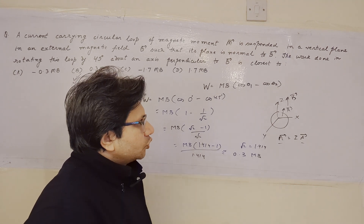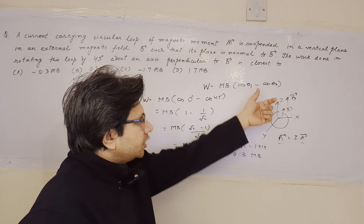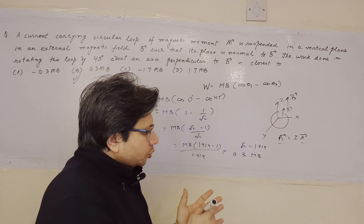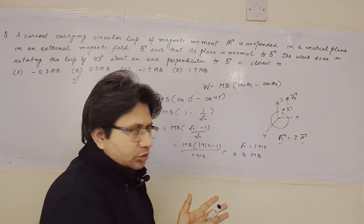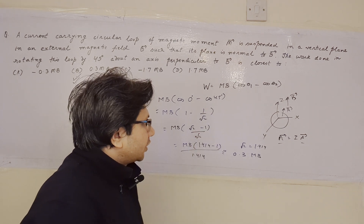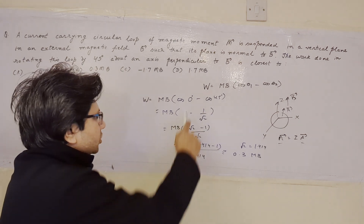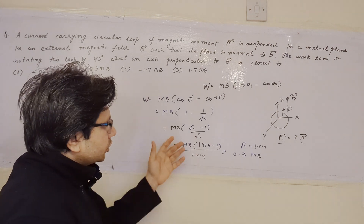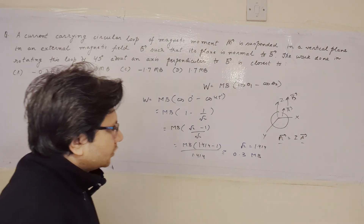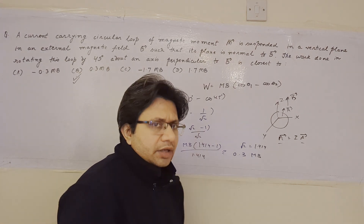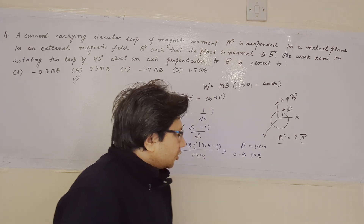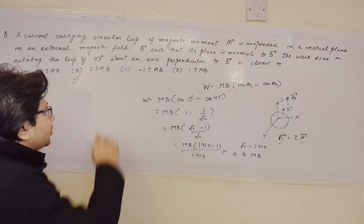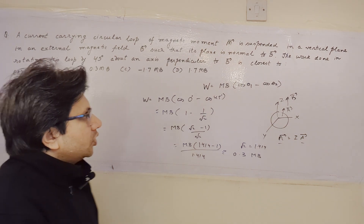When we move 45 degrees, θ₂ between the area vector and B becomes 45 degrees. Putting in the values of cos 0 and cos 45 and solving gives the final answer of 0.3 MB, which is positive, confirming option B is correct.